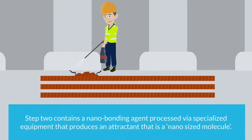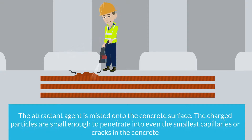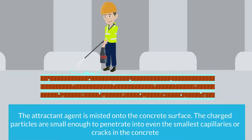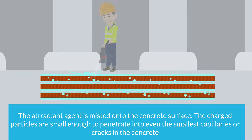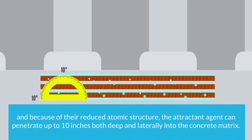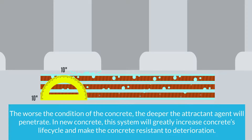Step two contains a nano bonding agent processed via specialized equipment that produces an attractant that is a nano-sized molecule. The attractant agent is misted onto the concrete surface. The charged particles are small enough to penetrate into even the smallest capillaries or cracks in the concrete, and because of their reduced atomic structure, the attractant agent can penetrate up to 10 inches both deep and laterally into the concrete matrix.